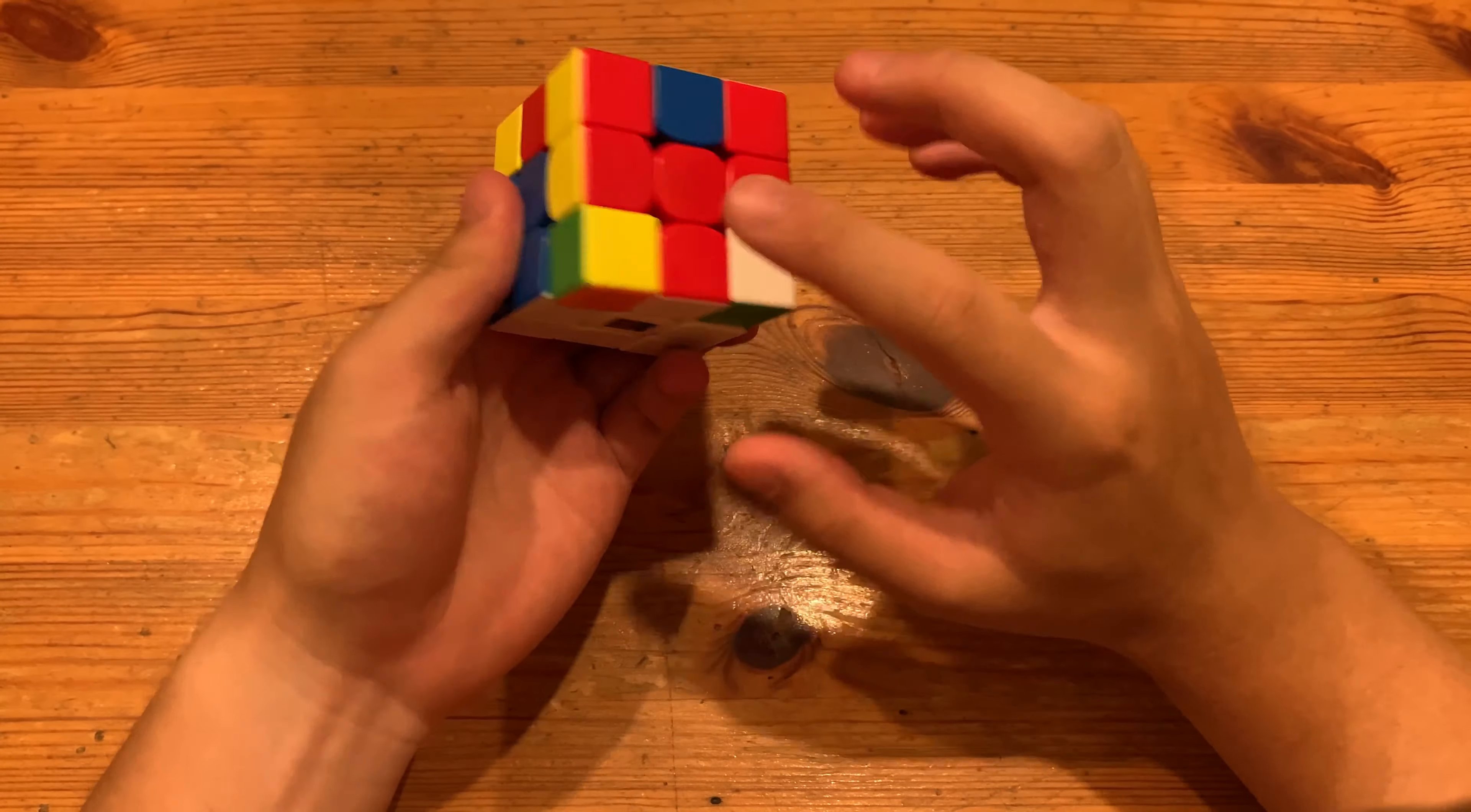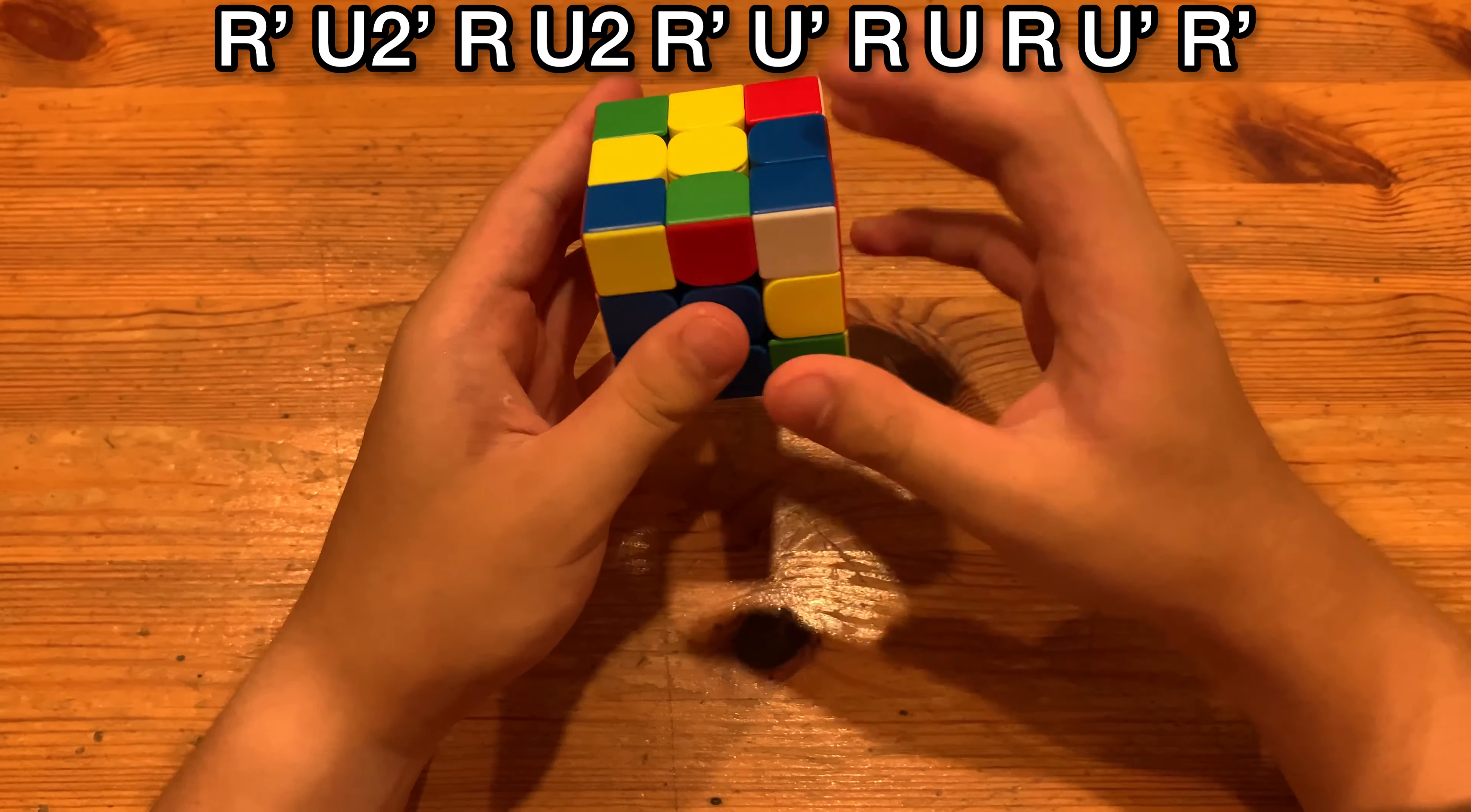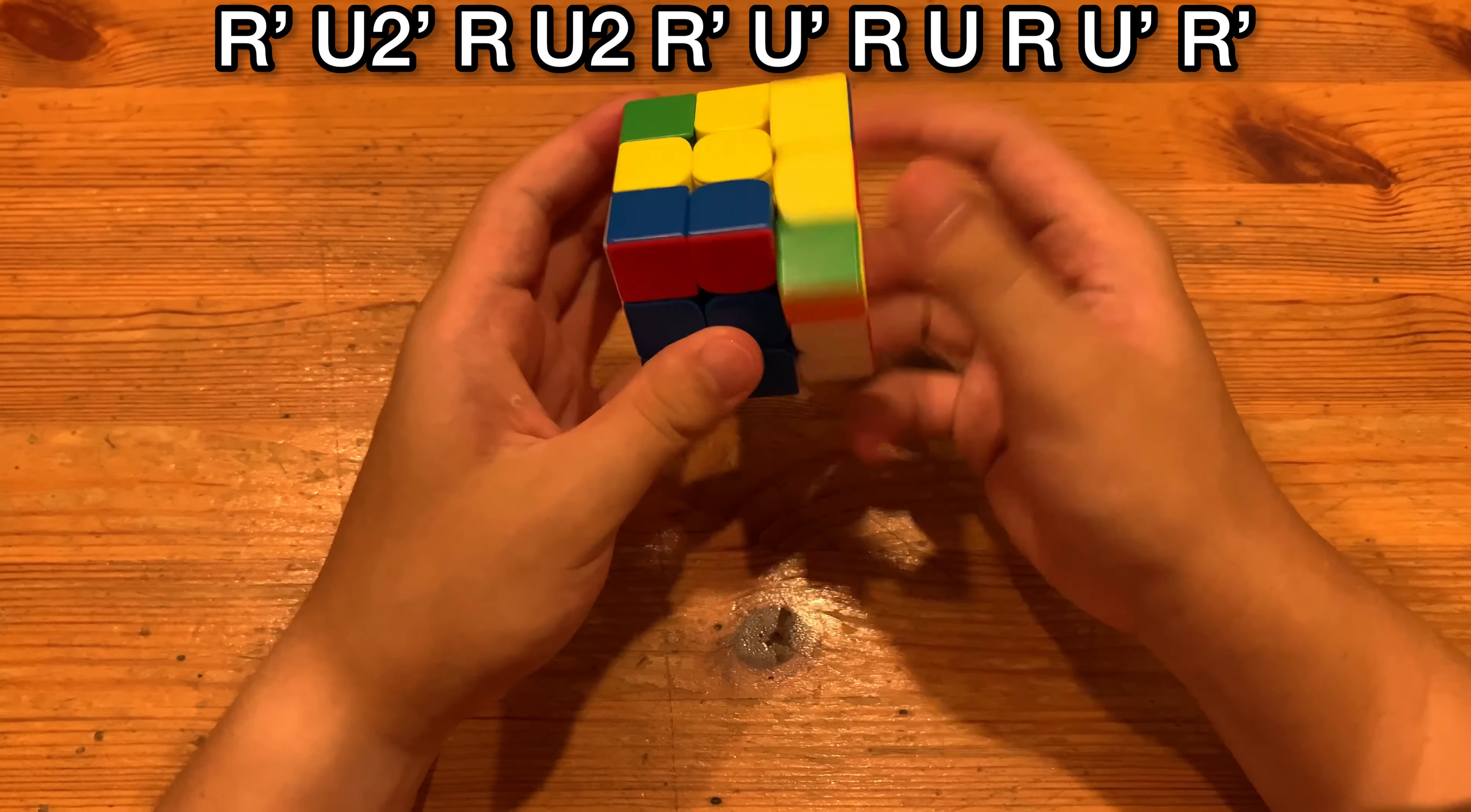And you just pair the back pair with R' U' R, which also takes this out. And you insert this one, and then you insert this one.